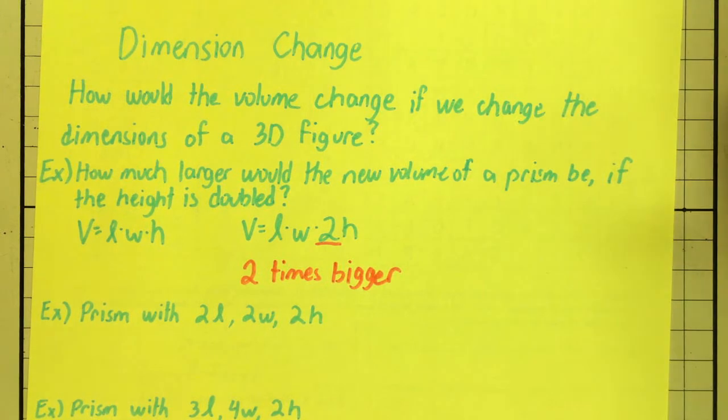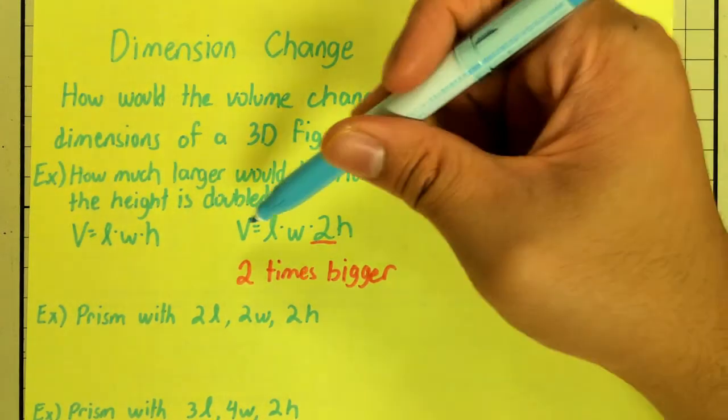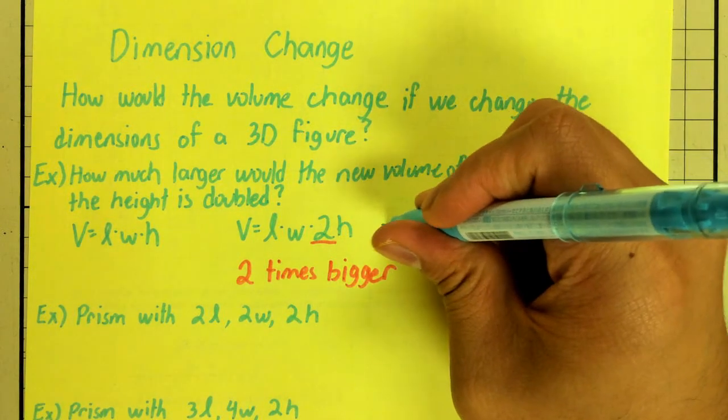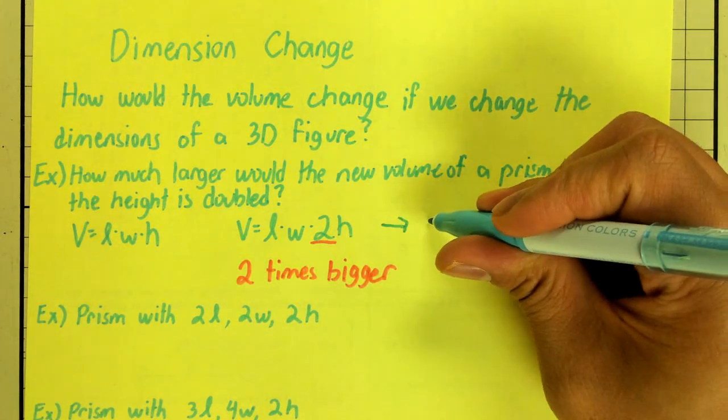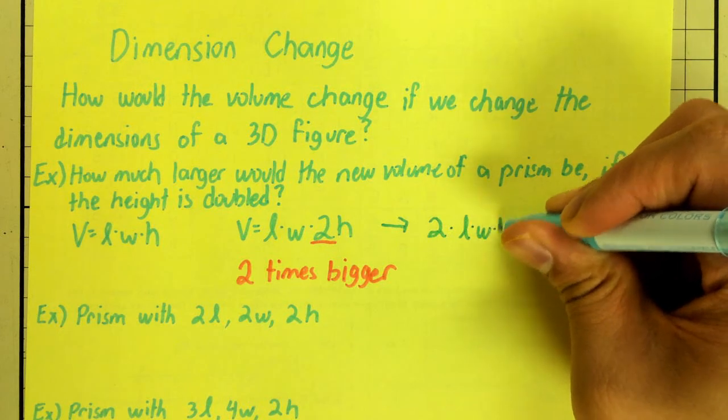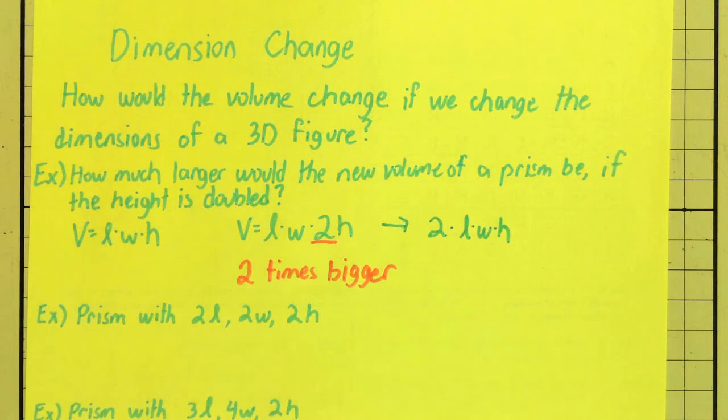And this, as an aside, this comes from multiplication properties. Length times width times 2 times H. Multiplication tells me that that 2, I can move to the front. So, really what I have is 2 times length times width times H. Meaning, I have 2 of the original. So, 2 times bigger.